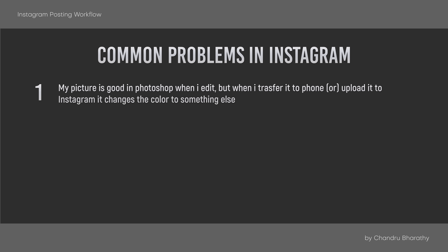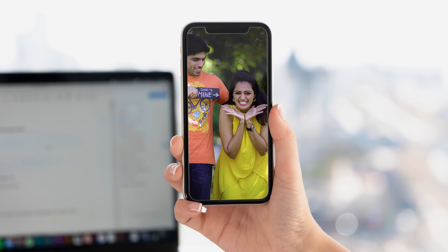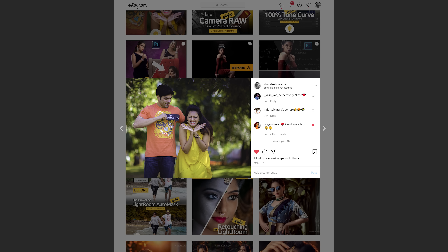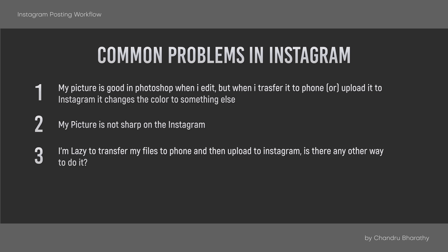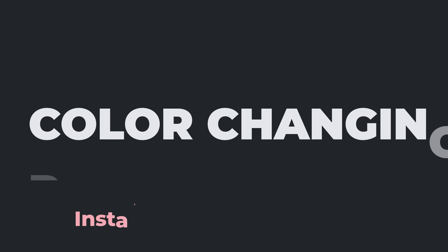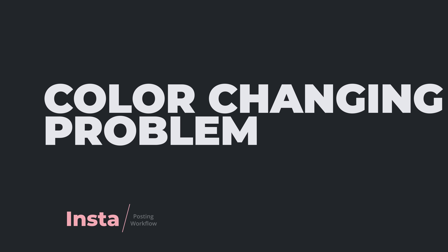The most common problems on Instagram: Number 1 — my picture looks good in Photoshop when I edit, but when I transfer to phone or upload to Instagram, the color changes to something else. Number 2 — my picture is not sharp on Instagram. Number 3 — I am lazy to transfer files to phone and then upload to Instagram; is there an alternate way? There are some amazing solutions.